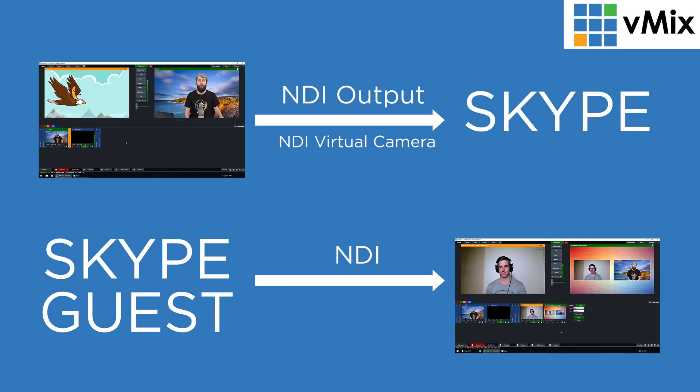I'll also show you how to get rid of any annoying audio echoes in vMix so that you can create your own audio mix to send to Skype, and how you can send your vMix production to your Skype caller. I'll also show you how you can add your Skype call into vMix via NDI. Here's a quick picture of what we're going to set up: we're going to go from vMix, send our NDI output via the NDI virtual camera into Skype, and then take our Skype guest and add them into vMix via NDI.